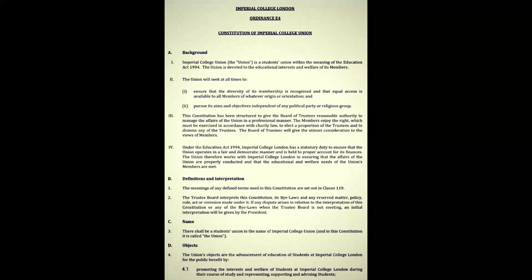The constitution continues: 'This constitution has been structured to give the board of trustees reasonable authority to manage the affairs of the Union in a professional manner. The members enjoy the right to elect a proportion of the trustees and to dismiss any of the trustees. Under the Education Act of 1994, Imperial College London has a statutory duty to ensure that the Union operates in a fair and democratic manner and is held to proper account for its finances. The trustee board interprets this constitution and bylaws in any reserve matter — if any dispute arises, an initial interpretation will be given by the president.'